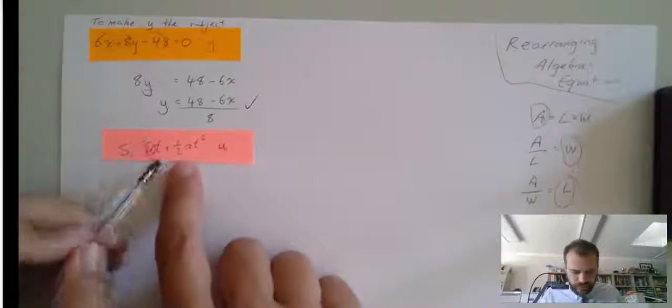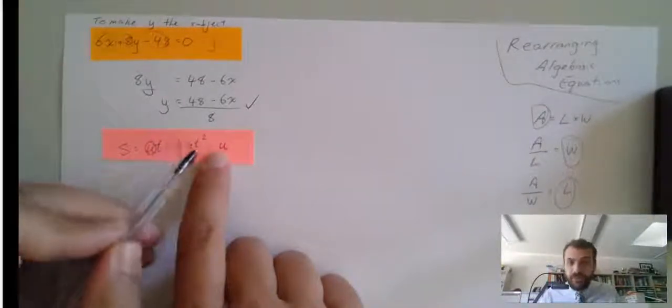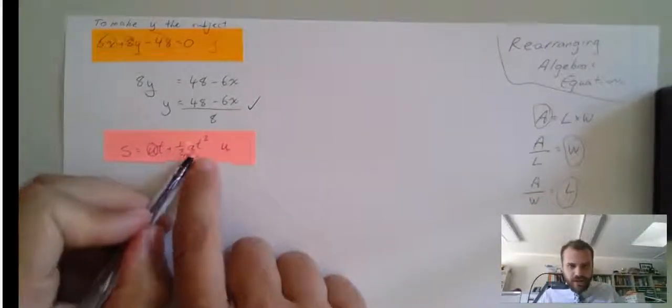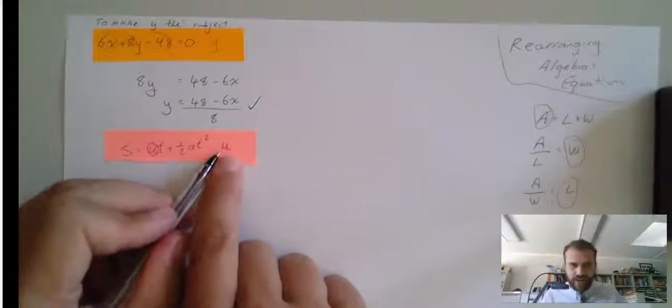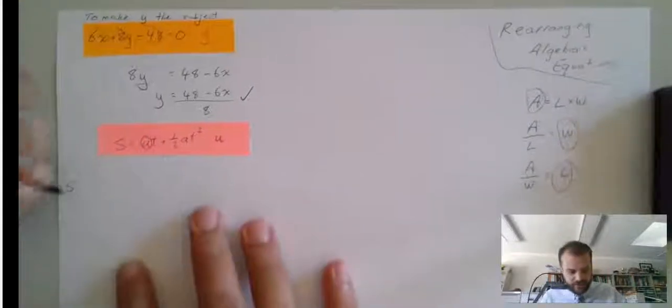Okay, so here's a whole term that we can get rid of, or move. So, it's going to be s. This is plus 1 half at squared. So, if I subtract 1 half at squared, it'll be gone from this side, and we can subtract it from this side.